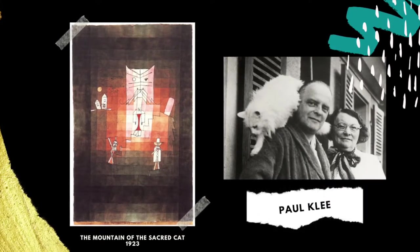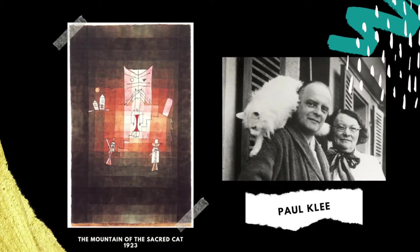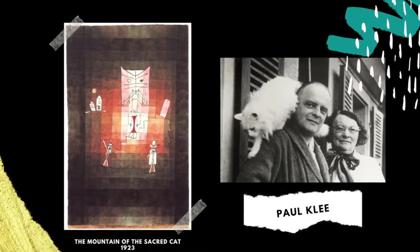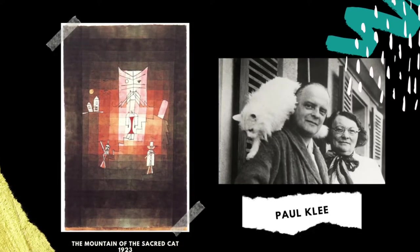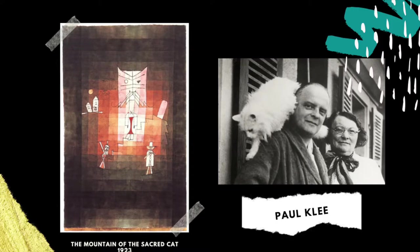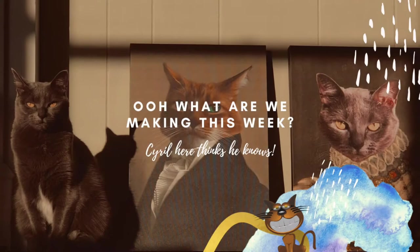He and his wife Lily had a white cat called Bimbo who he absolutely loved. He often included cats in many of his paintings as he found them so interesting.